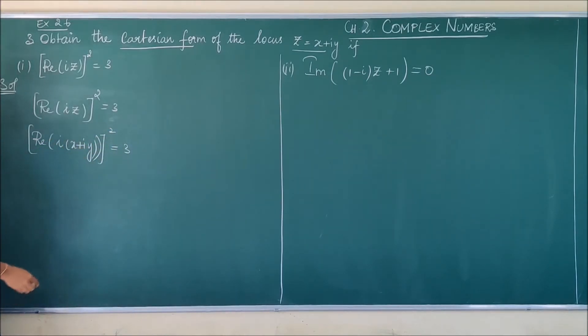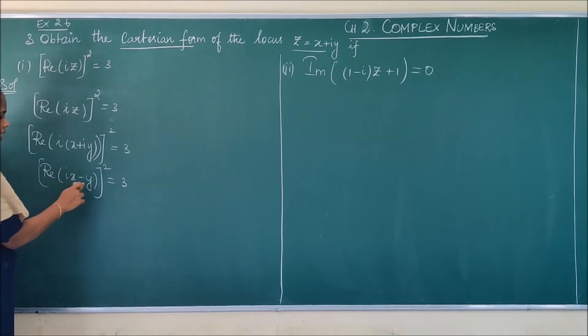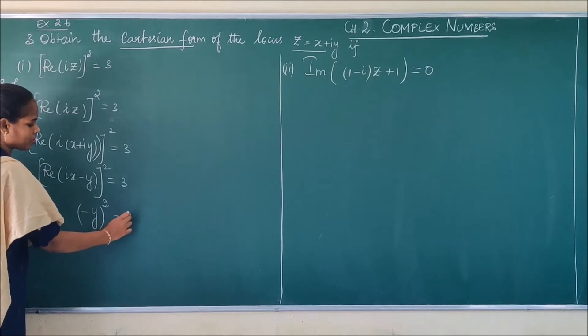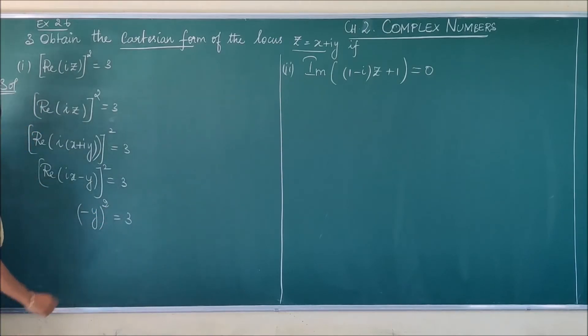Now I am just going to multiply i inside, so I am getting real part of (ix minus y) whole square equals 3. The real part of this: i times x means it is an imaginary part, and this is my real part. So real part of ix minus y is minus y, and this whole square.